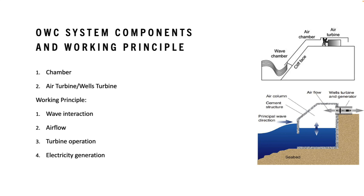However, there are also some challenges associated with the OWC system. The efficiency of power conversion is influenced by wave characteristics and the design of the system. Irregular wave conditions and variations in wave height can affect the power output, and the cost of construction and maintenance of the chamber can also be significant. Despite these challenges, the OWC system has been successfully deployed in various coastal locations worldwide, contributing to the generation of clean and renewable energy from ocean waves. Ongoing research and development aim to further improve the efficiency and cost-effectiveness of the OWC technology.